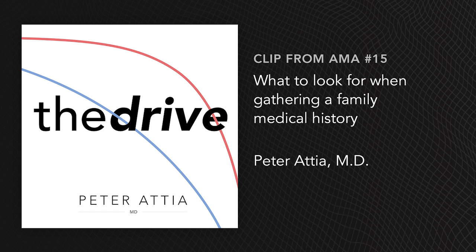I'm glad somebody asked that question because it's something I feel so strongly about. A lot of times patients will come in and say, 'I have my 23andMe data. Is that all you need?' And I say, actually, that pretty much tells me nothing. We'll take it, thank you very much, and we'll scour the hell out of it. We'll find out if you have a TOMM40 SNP that increases your risk of Alzheimer's disease, or a FOXO3 SNP. Obviously the genes we think really matter, we measure on our own — such as MTHFR and of course ApoE. But what I say to them is, this stuff doesn't mean jack compared to your family history.